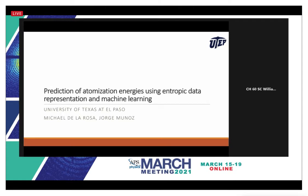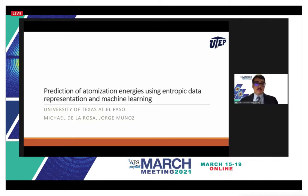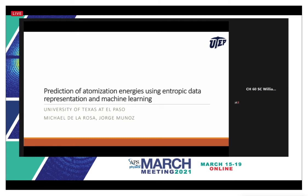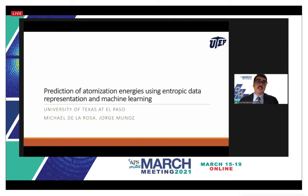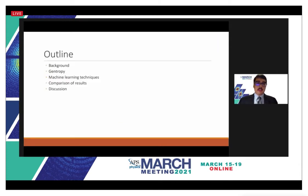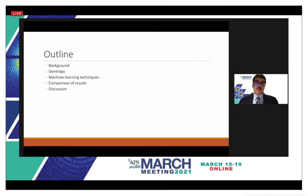Thank you very much. Good morning everyone. My name is Michael. I'm from the University of Texas at El Paso. My presentation today is on the prediction of atomization energies using entropic data representation and machine learning. A brief outline: first I'll give some background on the problem of data representation, then gentropy as a solution, the machine learning techniques we used, a comparison of results versus previous results, and a discussion of those results.